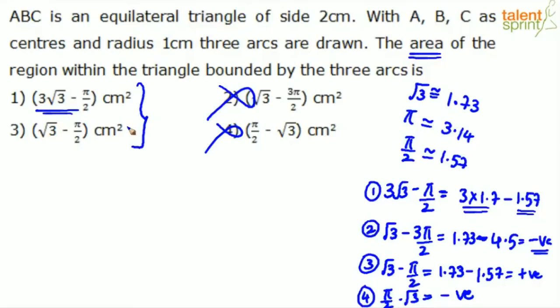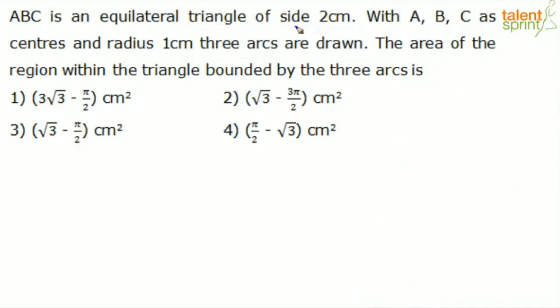Now, how do we solve this? He says ABC is an equilateral triangle. We know that option 2 and option 4 are wrong. Anyway, we are going to solve the complete question. Consider an equilateral triangle ABC. This is A, B, and C. Sides are 2 centimeters. All the sides are 2 centimeters here. He says with A, B, C as centers, A is a center, B is a center, and C is also a center. And radius 1 centimeter.